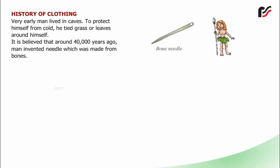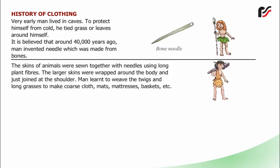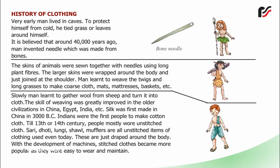To protect himself from cold, early man tied grass or leaves around himself. It is believed that around 40,000 years ago man invented the needle, which was made from bones. The skins of animals were sewn together with needles using long plant fibers. The larger skins were wrapped around the body and just joined at the shoulder. Man learned to weave twigs and long grasses to make coarse cloth, mats, baskets, etc. Slowly man learned to gather wool from sheep and turn it into cloth.